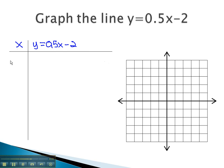If we start by picking x = -2, our equation becomes y = 0.5(-2), which is -1, minus 2. Working this out, we get y = -3.